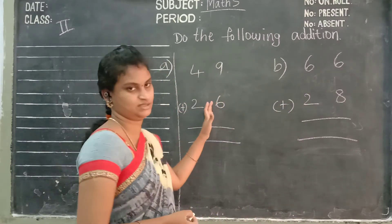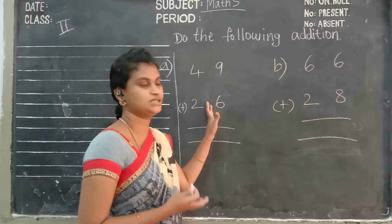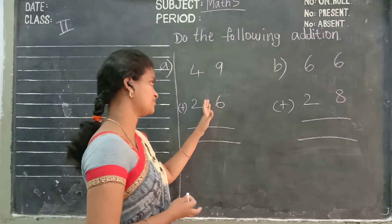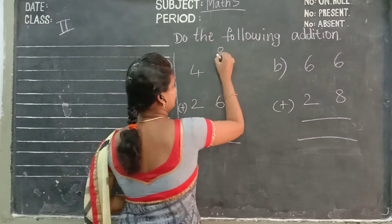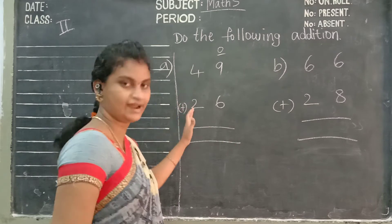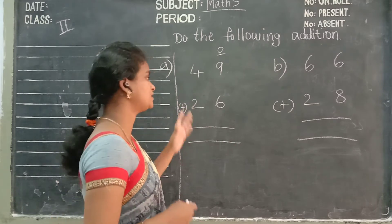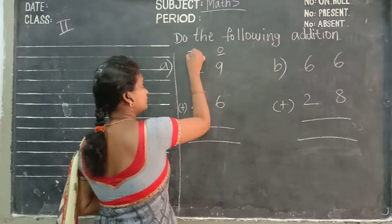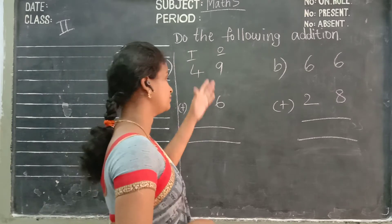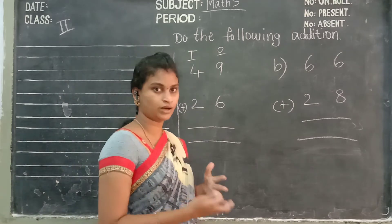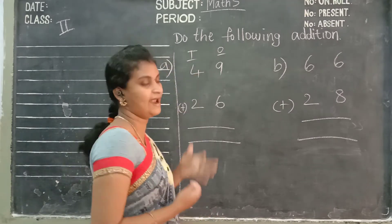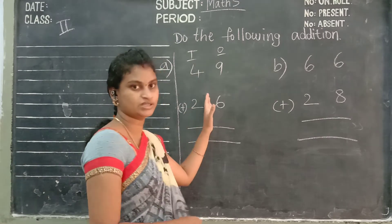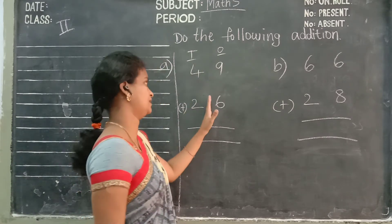9 and 6 — which place value? 1's place. 4 and 2 — which place value? 10's place. Now count 9 and 6 in 1's place. First of all, you are at 1's place.